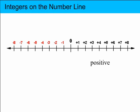Negative numbers have a negative sign or a minus sign in front of them, and positive numbers have a plus or positive sign in front of them. If a number doesn't have a negative or a positive sign, it's considered to be positive.